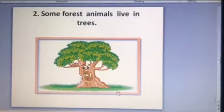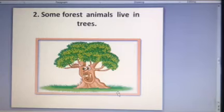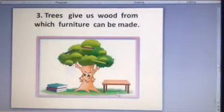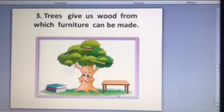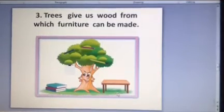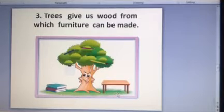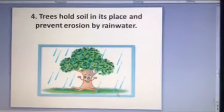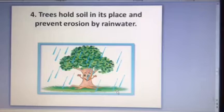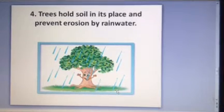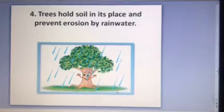The second one is, some forest animals live in trees, as we see here in the picture. The third one is that trees give us wood, from which furniture can be made. The fourth one is, trees hold soil in its place and prevent erosion by rain water.